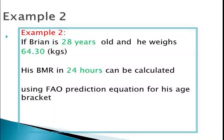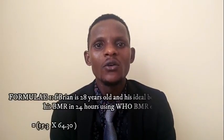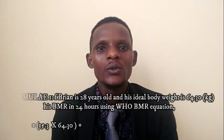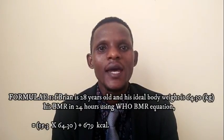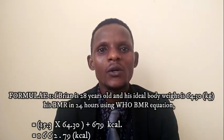Example 2: If Brian is 28 years old and his ideal body weight is 64.30 kilograms, his basal metabolic rate in 24 hours using the WHO BMR prediction equation is calculated as 15.3 × 64.30 kg + 679 kilocalories, which gives us 1,662.79 kilocalories.